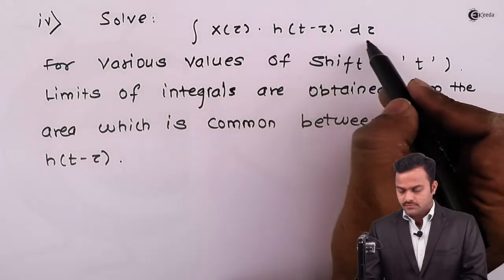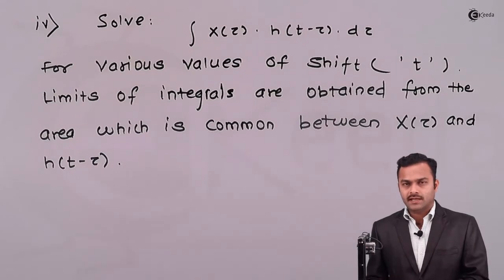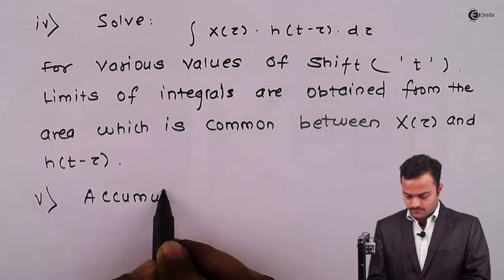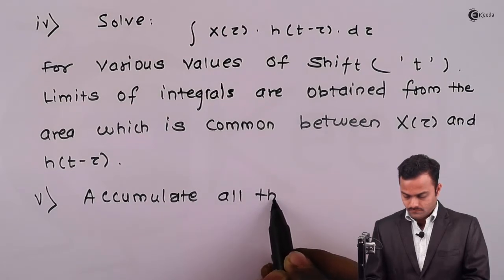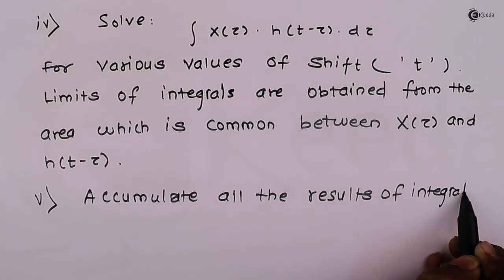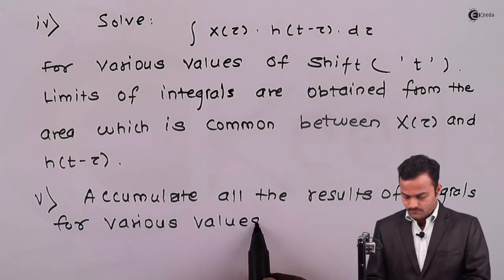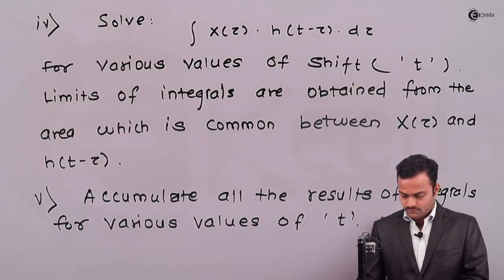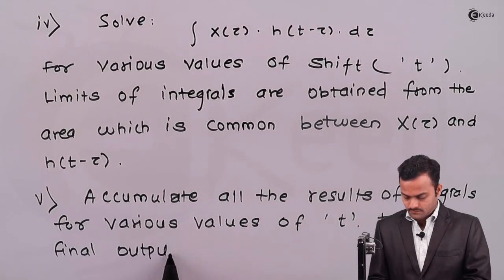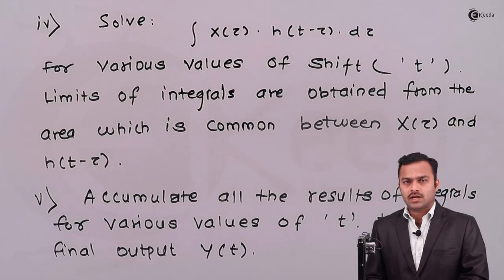So in the end, this will give you a certain value of y for a decided shift of t, and such shifts you have to accumulate in the end and then you have to plot y(t). So this is the procedure we need to follow to solve a problem based on continuous-time convolution.